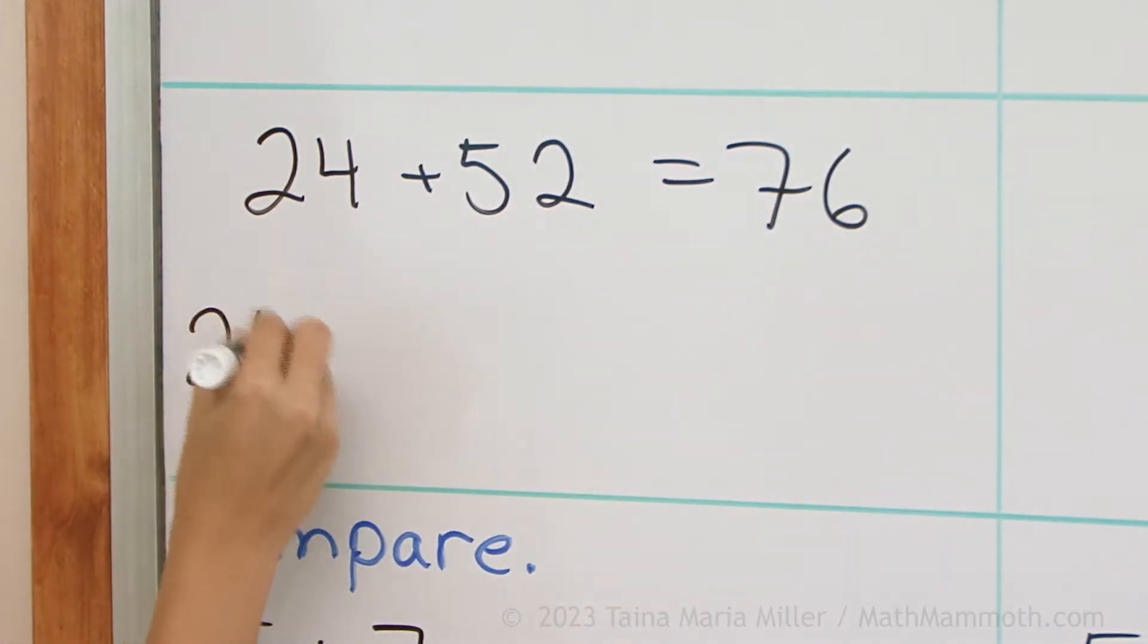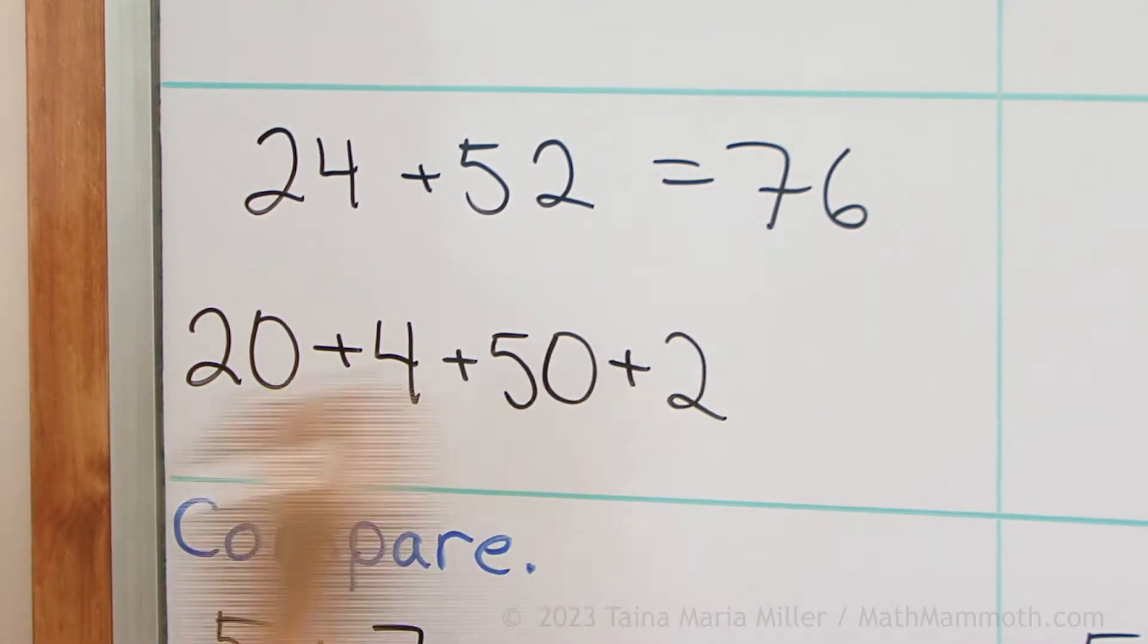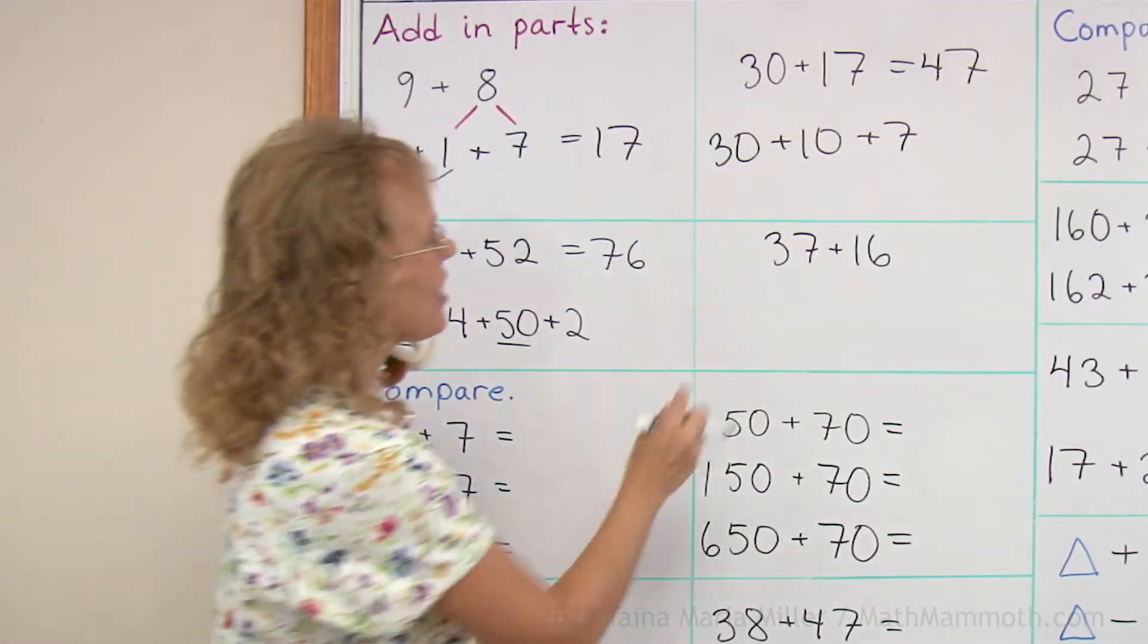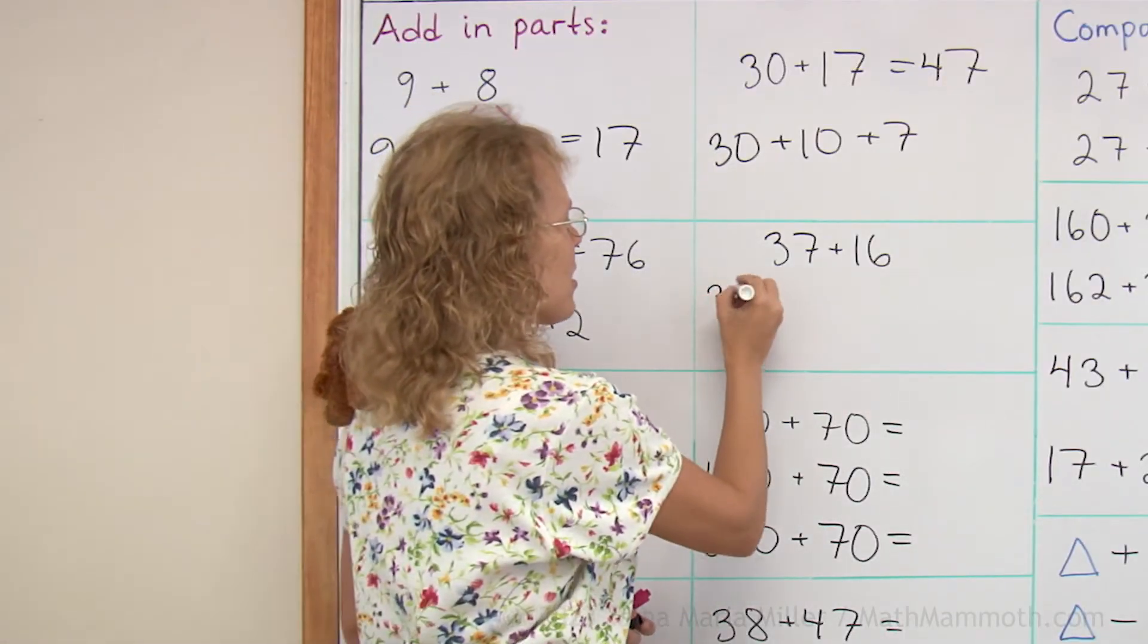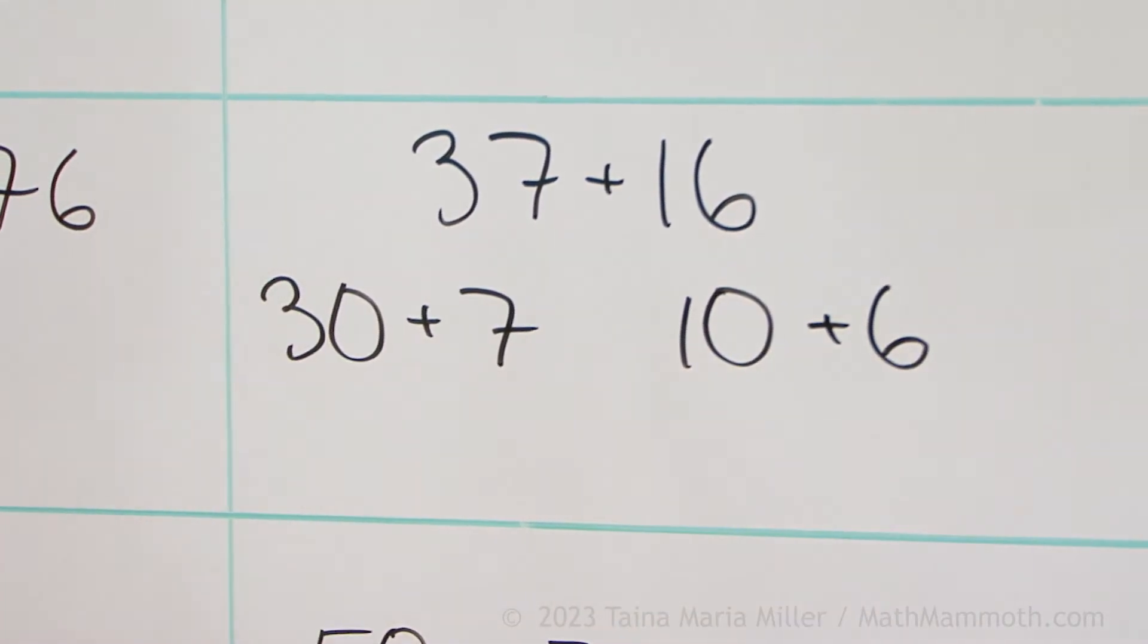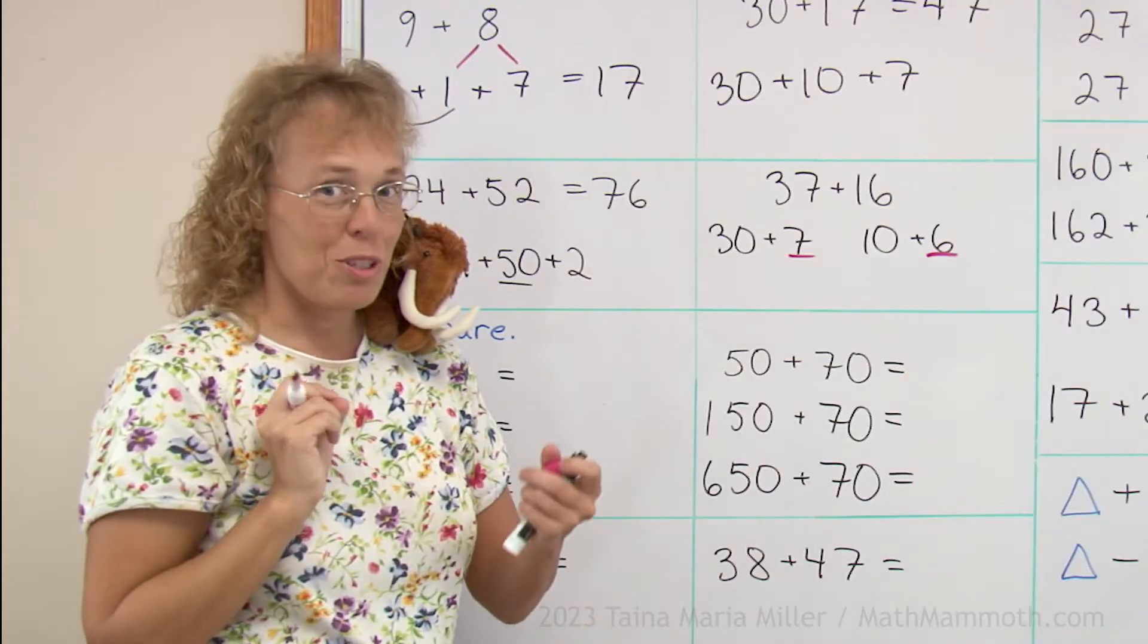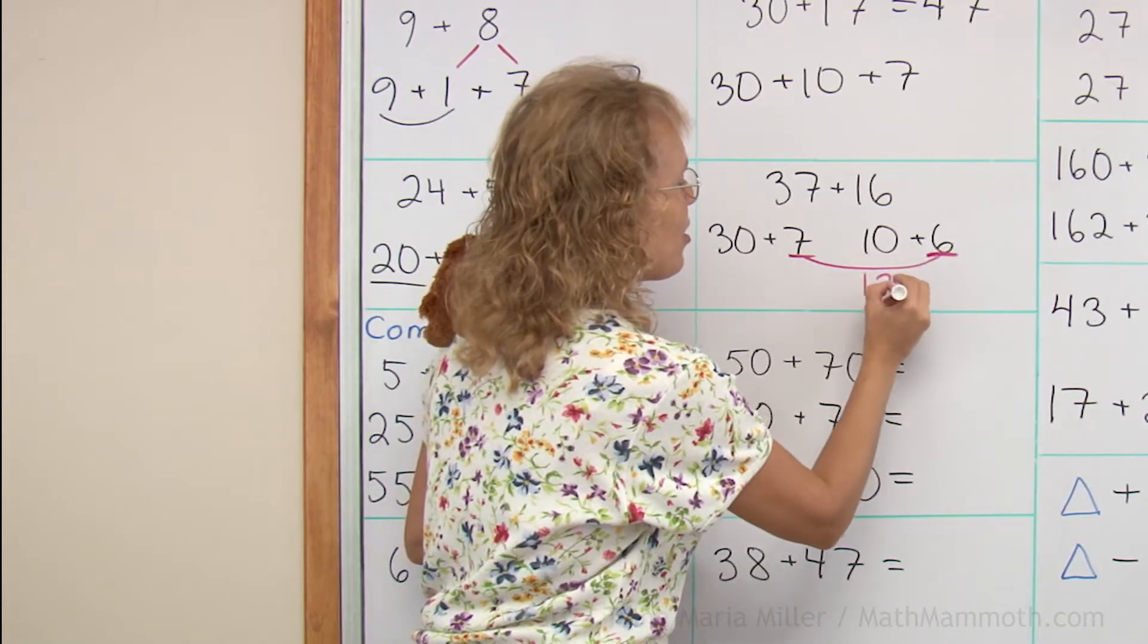So the thinking is thinking of it as 20 and 4 and 50 and 2, and then adding 20 and 50 and then 4 and 2. Let's try the same here. 37 plus 16. So I think of it as 30 and 7 and 10 and 6. And then over here, 7 and 6. You know that from your addition facts. 7 and 6, those would make 13.